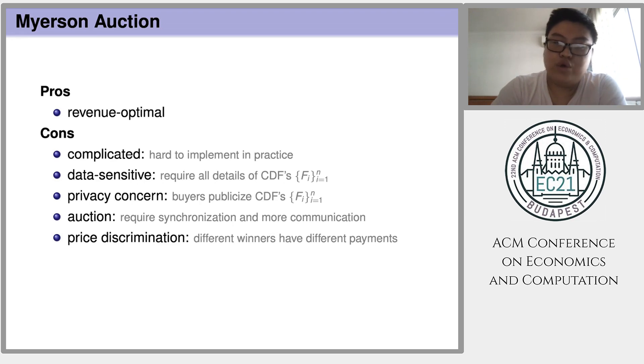Third, in Myerson Auction, every buyer needs to publicize his value distribution, not just to the seller but also all other potential buyers. This may incur some privacy concern. Fourth, Myerson Auction requires synchronization and more communication compared with other mechanisms like pricing schemes.